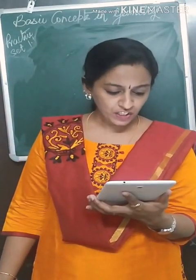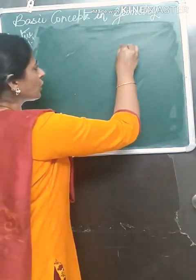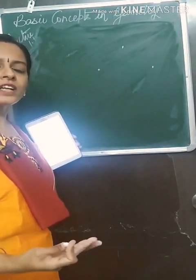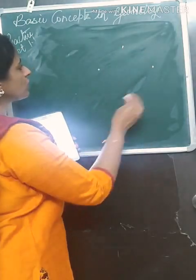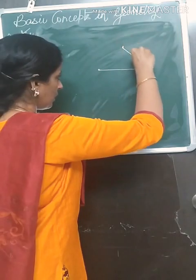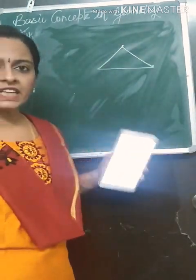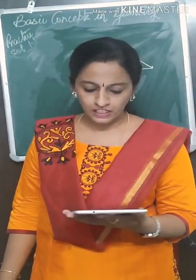Now we have the last sum: which figure is formed by 3 non-collinear points? Non-collinear points means points which do not lie on the same line. If you join 3 non-collinear points, you get a triangle. A triangle is formed by 3 non-collinear points.